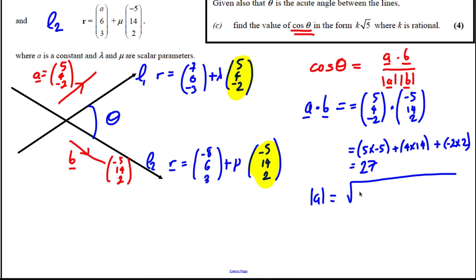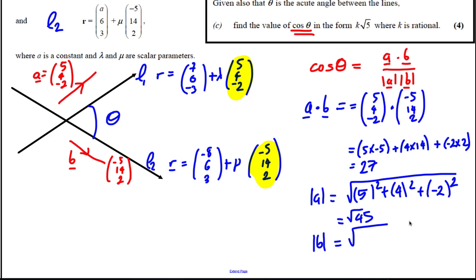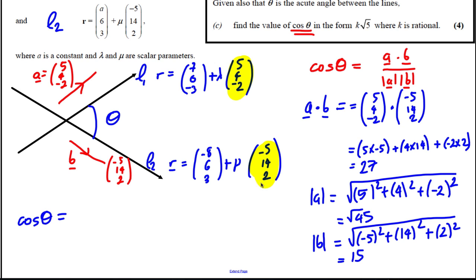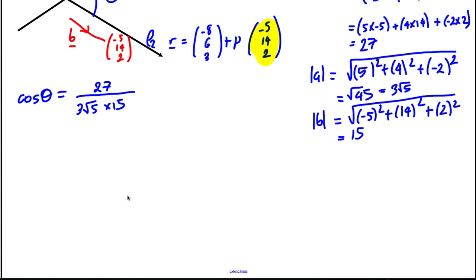The modulus of a: |a| = √(25 + 16 + 4) = √45 = 3√5. The modulus of b: |b| = √(25 + 196 + 4) = √225 = 15. So cos θ = 27 / (3√5 × 15) = 27 / (45√5).